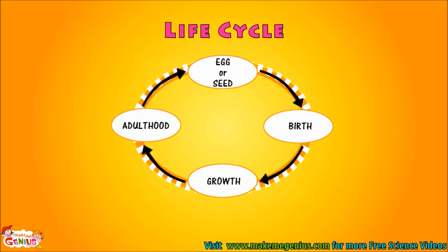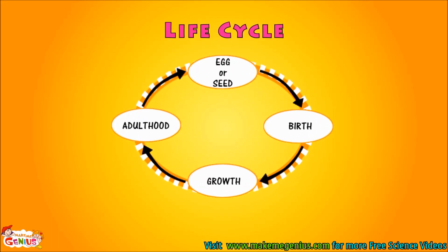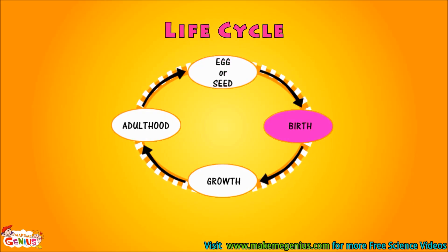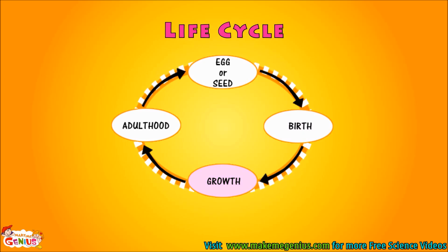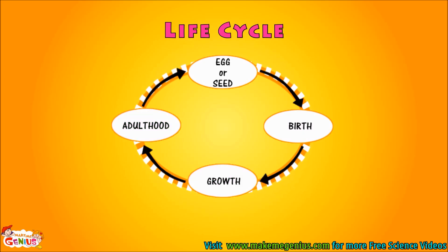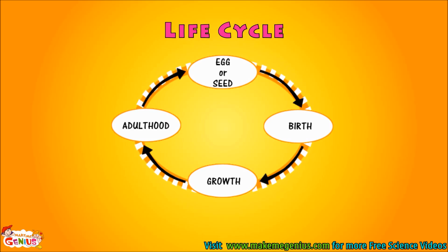Look at this picture. It shows a simple life cycle. All living species keep changing throughout life. It starts from an egg or seed. They take birth, they grow up, then they become adults, and they reproduce at this stage. When a plant or animal reaches young age, they can make babies.